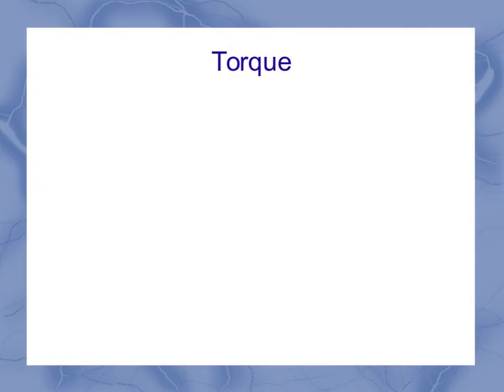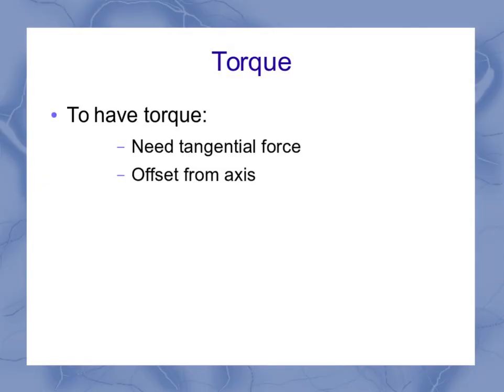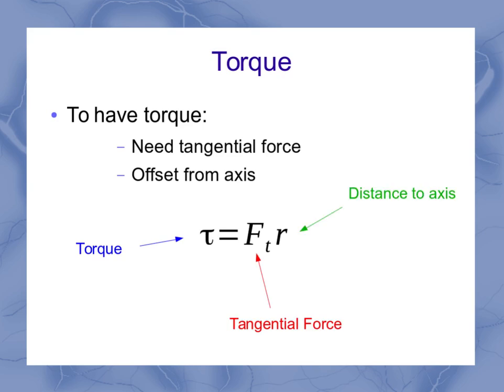So I'm going to start with torque. To have a torque, you need a tangential force that was offset from the axis. And as an equation, that was torque, the Greek symbol tau, the tangential force, and the distance to the axis r, sometimes called the radial distance.